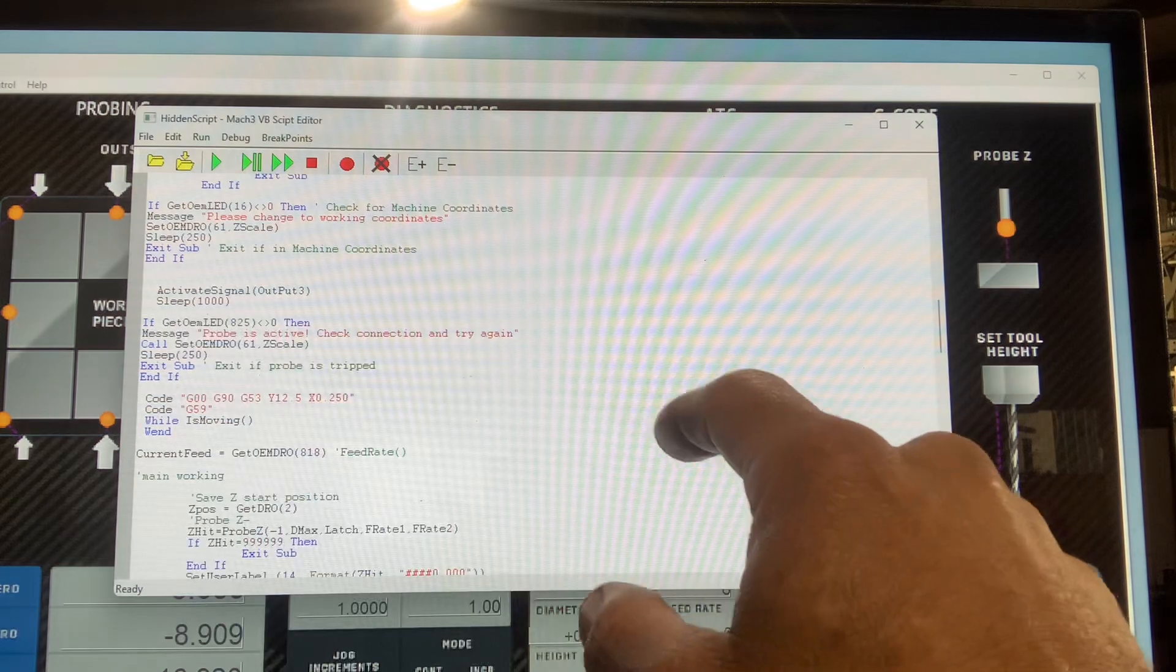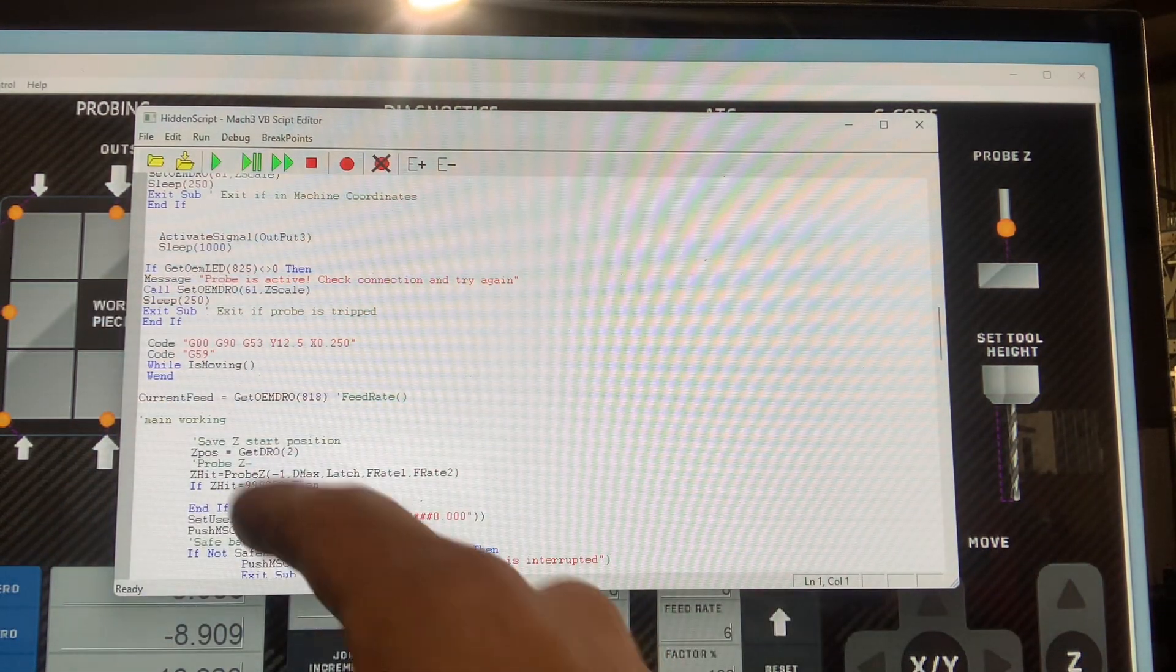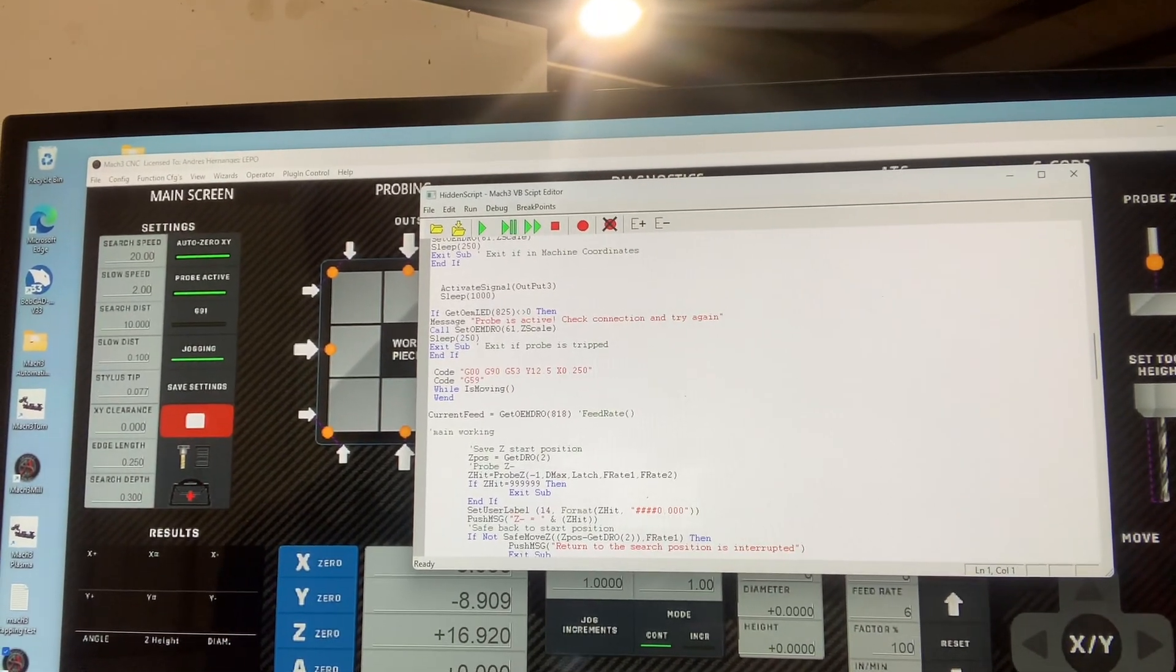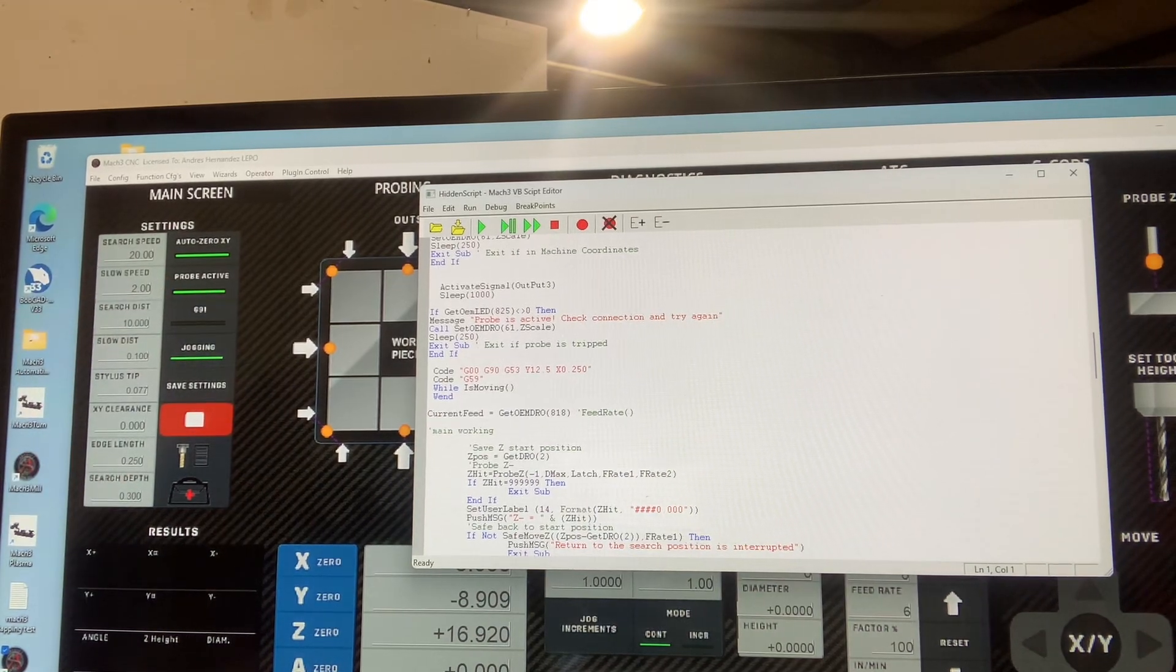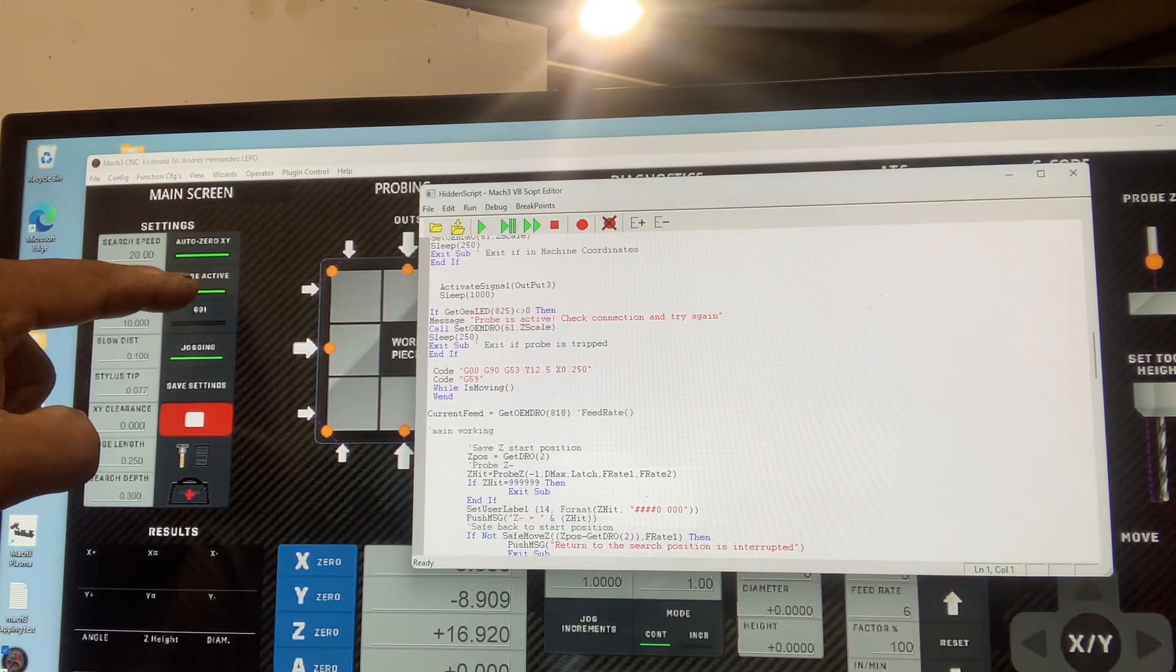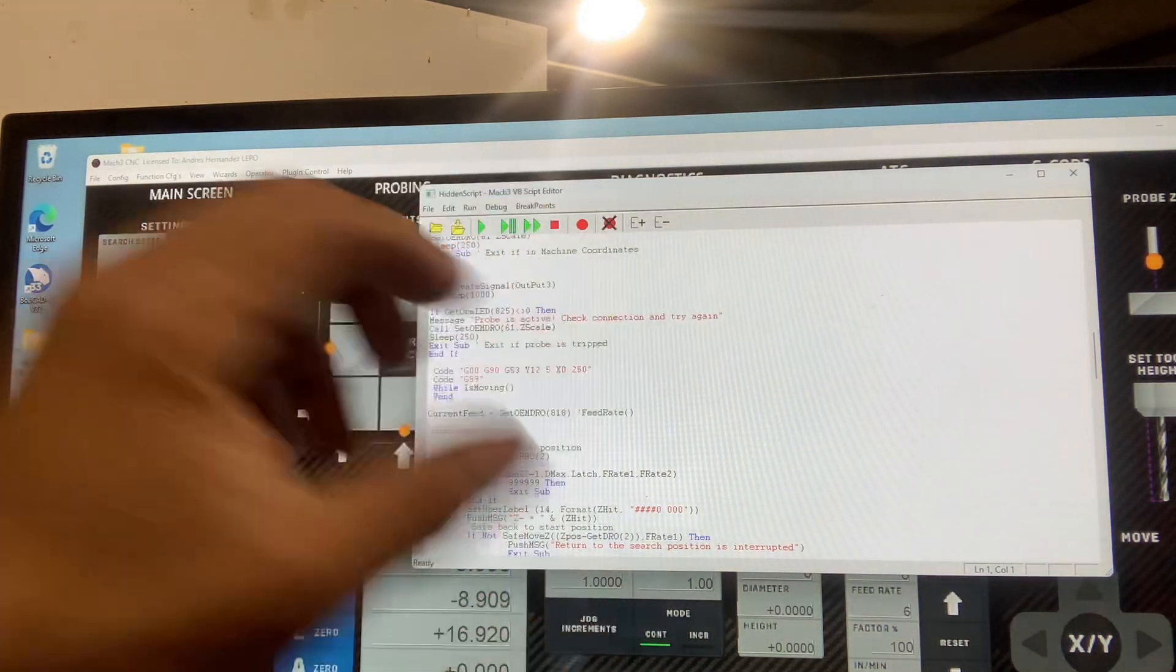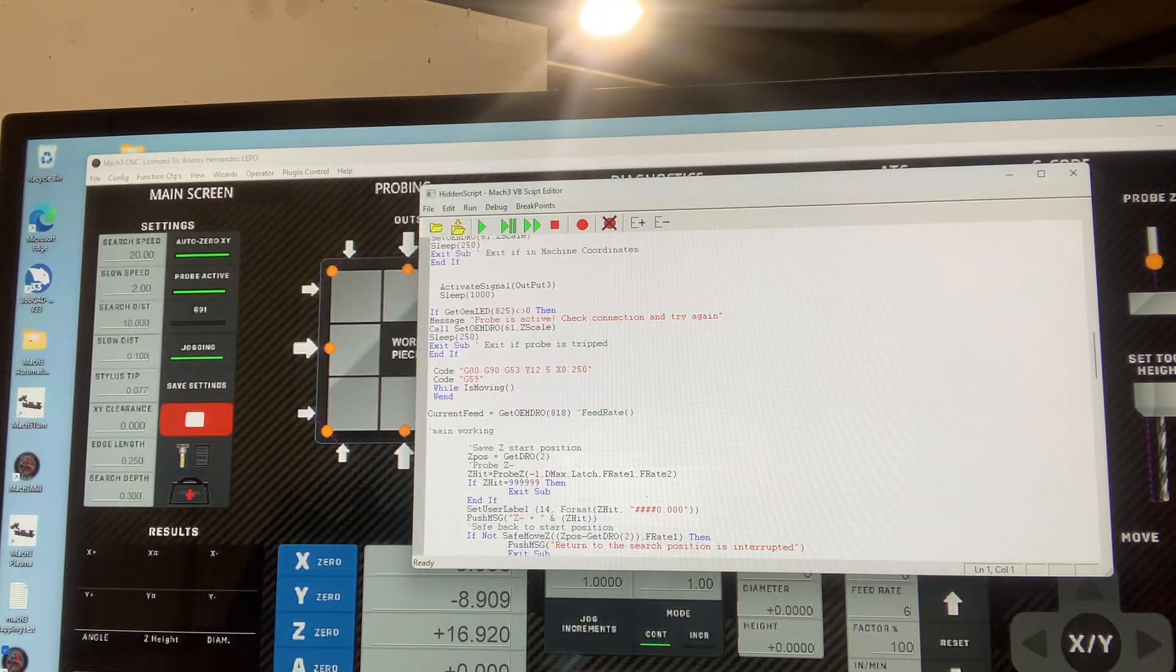I wait for one second, then I make sure I get feedback to my LED. See this LED right here? That's my probe. So if my output comes on and this LED doesn't go off, that means something happened with the wiring. I'm not getting feedback to Mach3, so the whole macro is going to stop working.